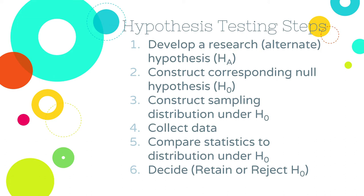Once you have stated your alternate hypothesis, you construct a corresponding null. Then, the process that happens — albeit in the background — is that you have to have a sampling distribution under the null hypothesis. You would say, given the null is true, what do I expect to occur? We know what to expect under the null because it's a statement of equality, so the mean of that distribution will have to be zero — no difference. And then we can estimate the standard error for that distribution using values like the standard deviation from our samples and sample sizes.